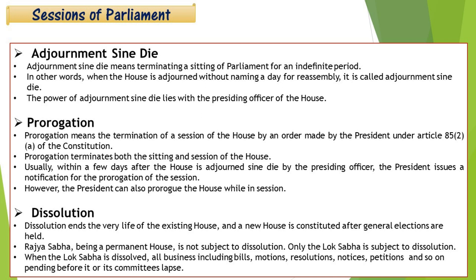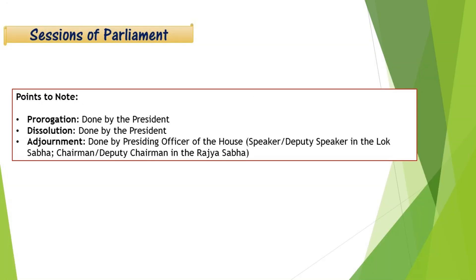When Lok Sabha is dissolved, all business including bills, motions, resolutions, notices, petitions and so on pending before it commits lapse — meaning everything pending lapses. Prorogation is done by the President. Summoning is also done by the President. Adjournment sine die is done by the presiding officer of the house — that is, the Speaker and Deputy Speaker in Lok Sabha, and the Chairman and Deputy Chairman in Rajya Sabha.